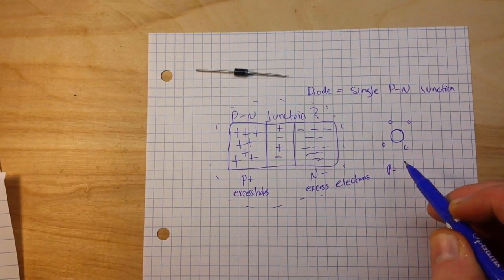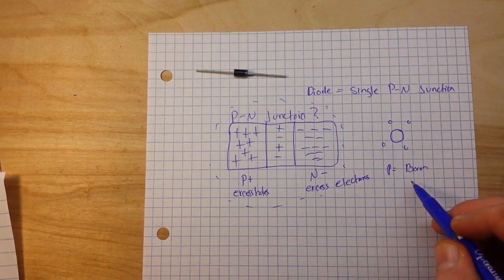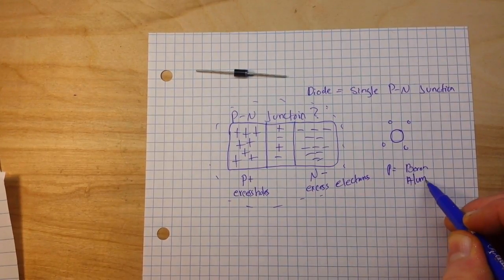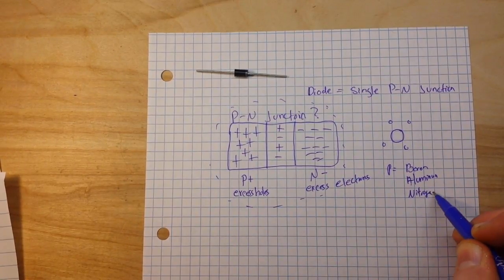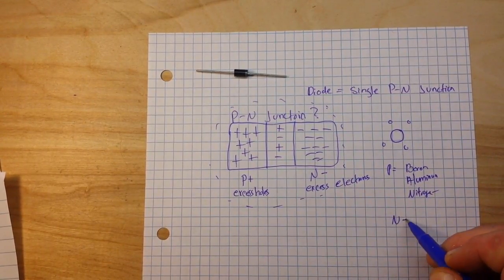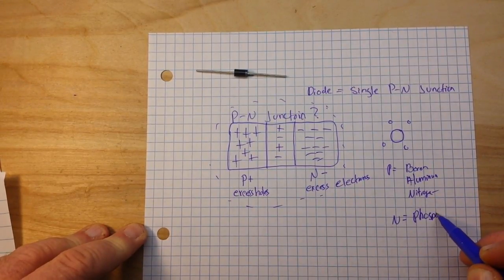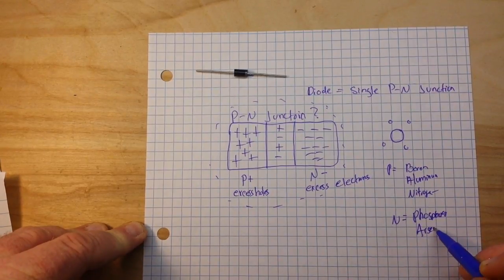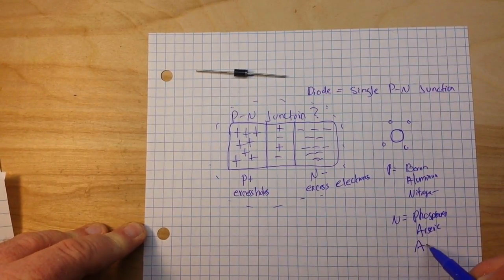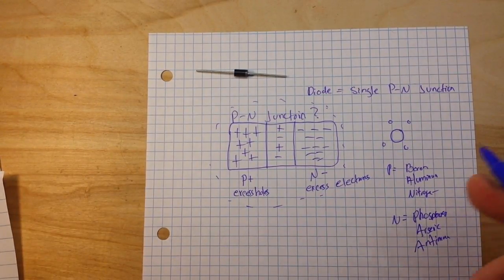Like for instance, for the P-type doping, the most common are boron, aluminum, nitrogen, and so on. And for the N-type, it's phosphorus, arsenic, antimony. Those are our dopants that we're using here.